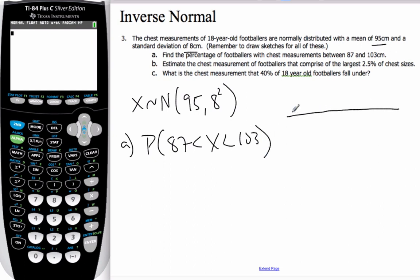And if I draw my quick sketch, here's my 95. So 87 is over here, 103 is here, and I'm looking for that value there. Now, 8 is a standard deviation, 95 plus 8 is 103, 95 minus 8 is 87. So this is one standard deviation and one standard deviation,